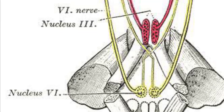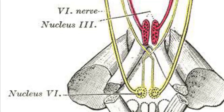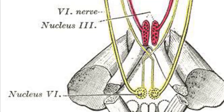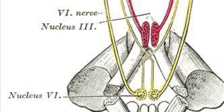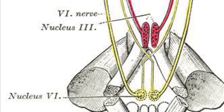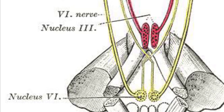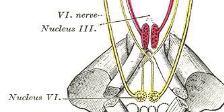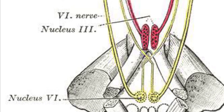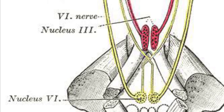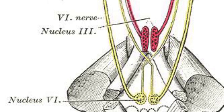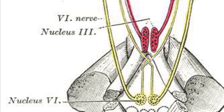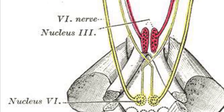The nucleus of the sixth nerve lies in the floor of the fourth ventricle, just lateral to the midline. The sixth nerve exits from the brain stem anteriorly at the pontomedullary junction. It is the most medial of the three nerves which exit from this groove.